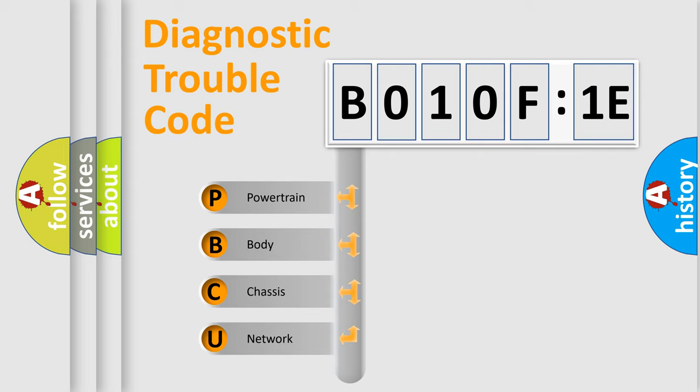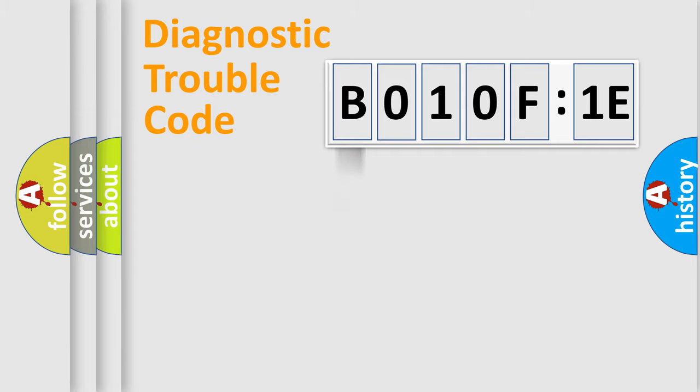We divide the electric system of an automobile into four basic units: Powertrain, Body, Chassis, and Network.